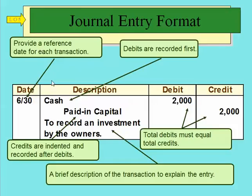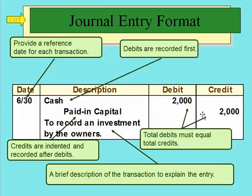Here's what a journal page typically looks like — this would be just one transaction. We have a place for the date. Then we record our debits and credits — debits are always first, then credits, which get indented slightly. We'll have a debit and a credit column. We can have more than one debit and more than one credit, as long as our debits equal our credits. They must absolutely match; otherwise we know we've made a mistake. Then we include an explanation of the journal entry and leave a space.